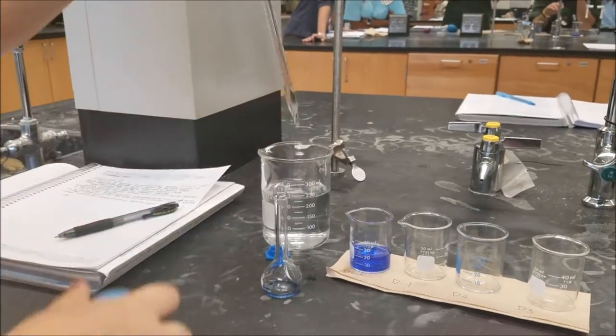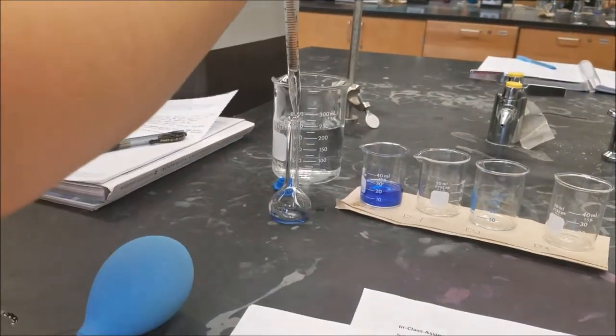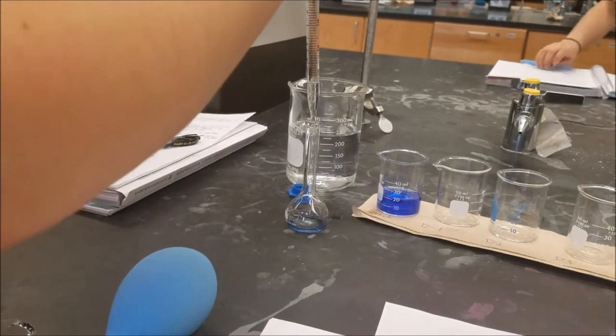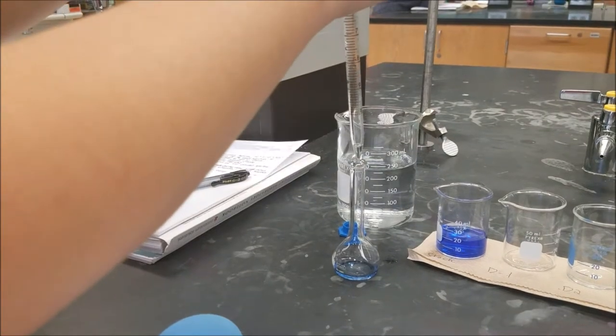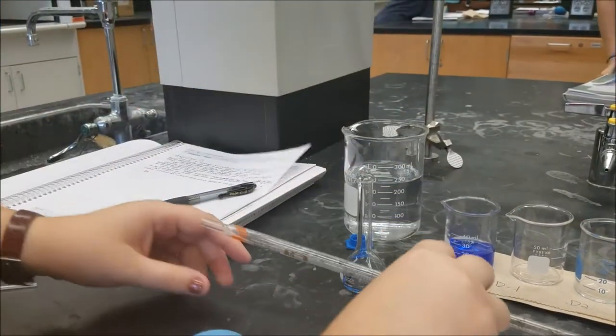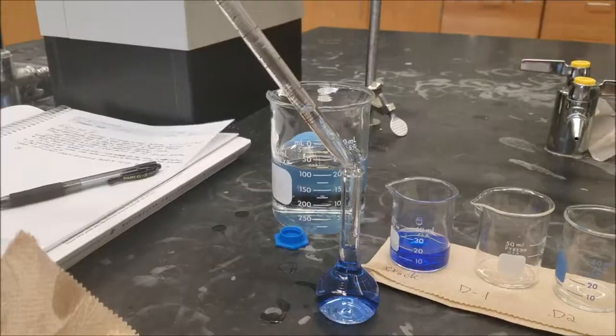Then, use the pipette once again to add water to the flask until the bottom of the meniscus rests on the line. If you pass the line, then you must discard the solution and make another dilution.